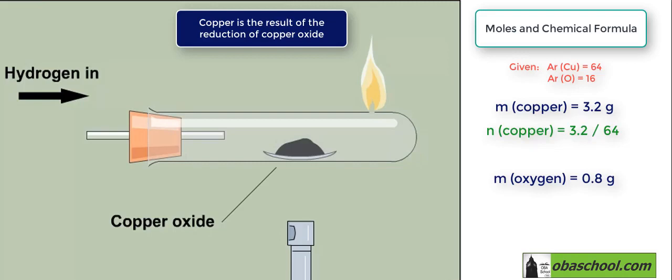What's the mass of copper? 3.2, because we already calculated it, and given is the relative formula mass, which is 64. Dividing them together gives us 0.05 mole.